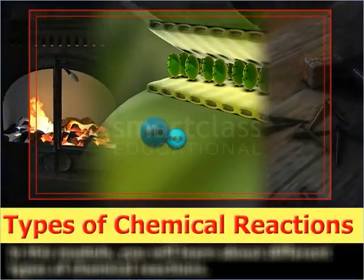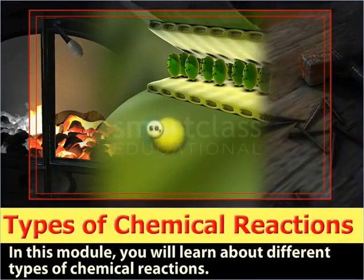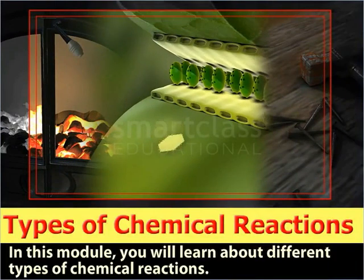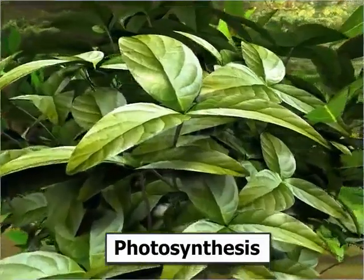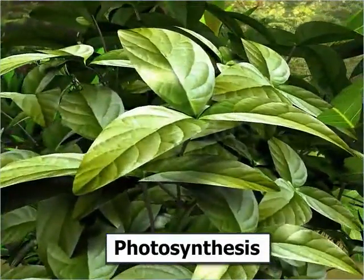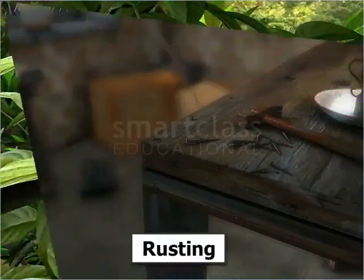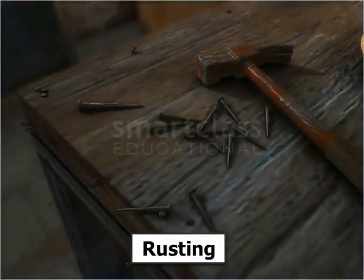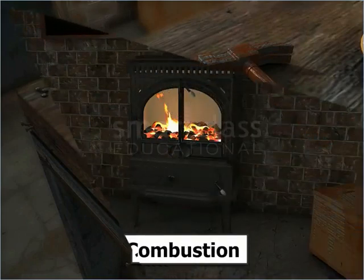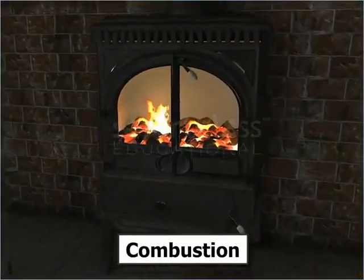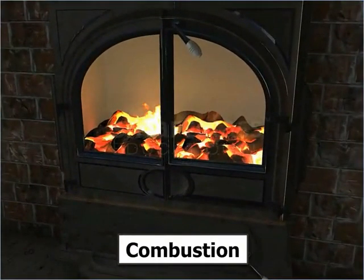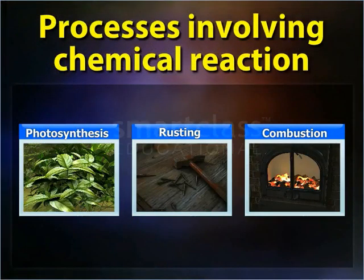Types of Chemical Reactions. In this module, you will learn about different types of chemical reactions. Green plants prepare their food by photosynthesis. An iron object rusts when kept in moist air. Coal burns to produce heat, which is used for different purposes. These are examples of some common processes that involve a chemical reaction.